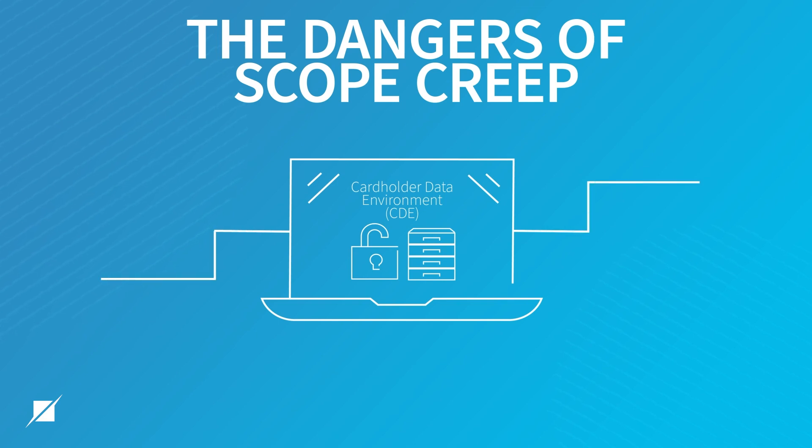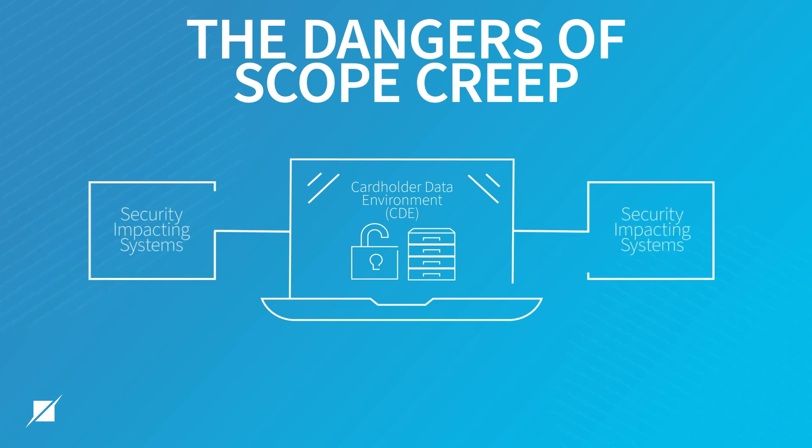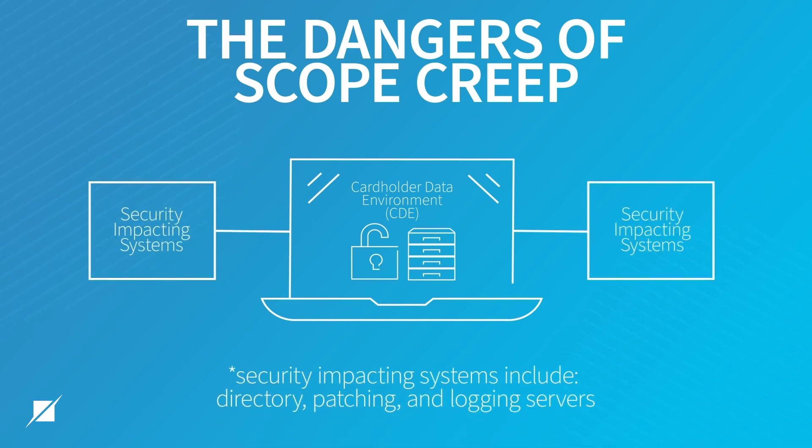Then you have the systems that are not that, but they can impact the security of those systems and networks. When identifying and confirming the scope of your environment, look at authentication domains, reporting functions, logging functions, and other management systems involved, which apply patching or perform other security-related functions that can impact that. Based upon that analysis, you'll have your scope and can confirm whether or not you've got scope creep.